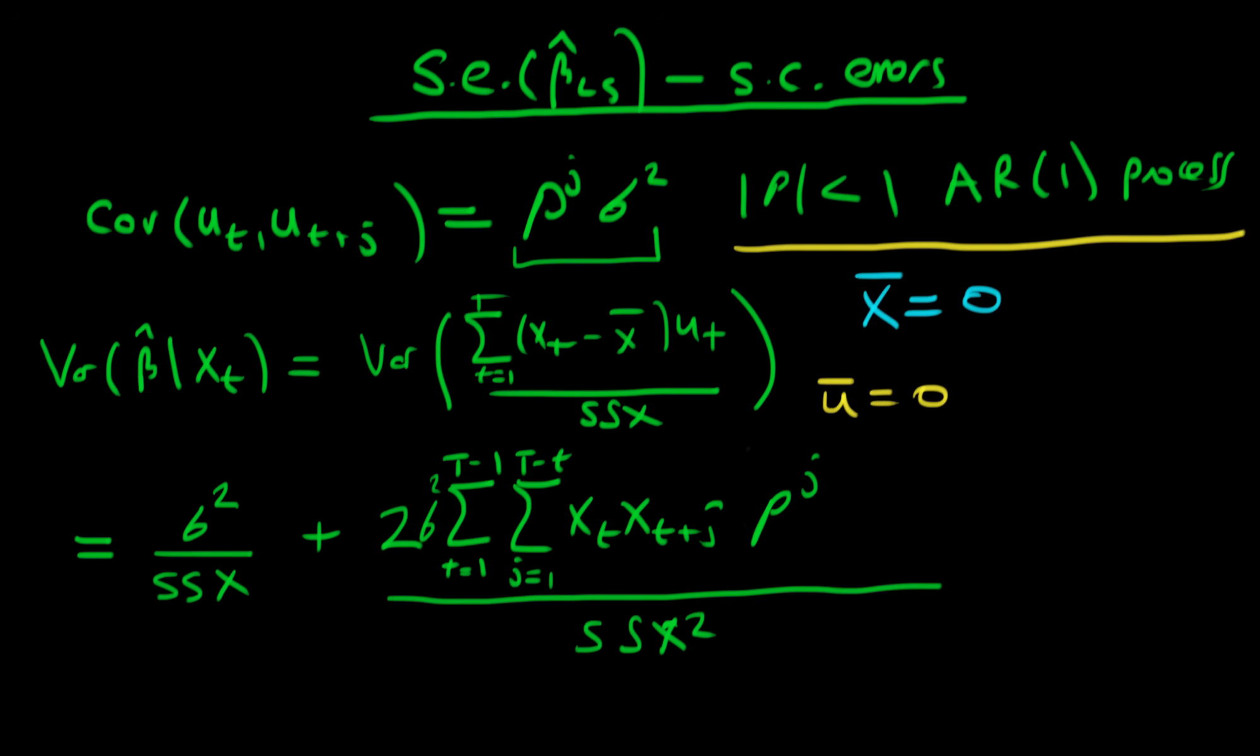Okay so I know it seems like a lot of maths, and what have we got out at the end? Well we've got that the variance of beta hat given xt is equal to the variance of beta hat given xt if we have no serial correlation plus this term on the right hand side. And an obvious question to ask is what sign does this second term actually take?